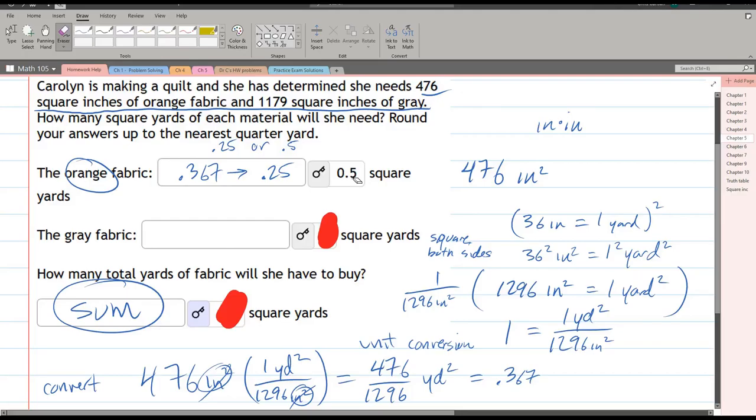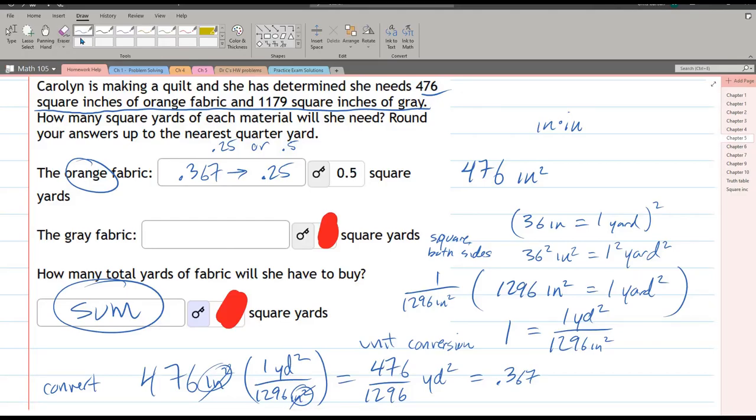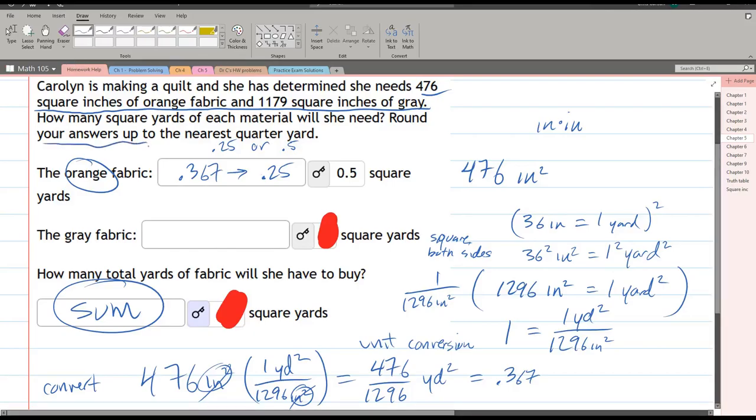Nearest quarter yard. That's a reading problem. Round your answers up to the nearest quarter yard. We're definitely going to go to 0.5. We should read questions. Obviously, if you're going to make something you can't buy less. You have to round up, not down.